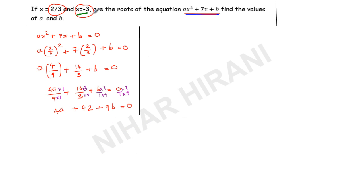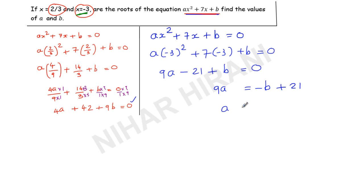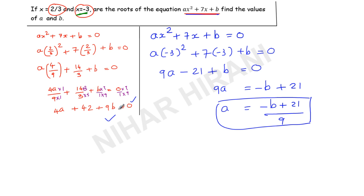Now let us work with the value x = minus 3. Instead of x I will substitute minus 3. So a(−3)² + 7(−3) + b = 0. Now minus 3 times minus 3, i.e., 3², gives positive 9. So 9a − 21 + b = 0. Rearranging: 9a = −b + 21, so a = (−b + 21) / 9. I will substitute this value of a into equation 1.